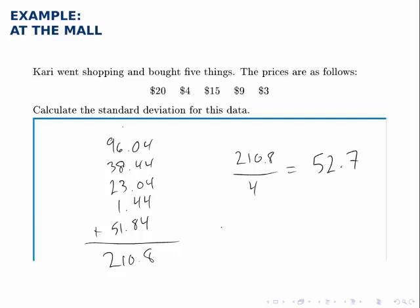The last step is to take the square root of that, the square root of 52.7 is 7.26 so the standard deviation of this data set is 7.26 or the distance that a typical data point is from the center.